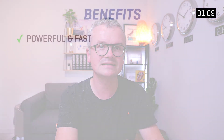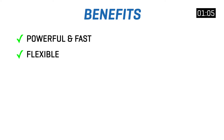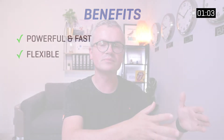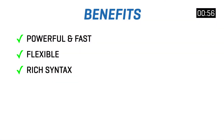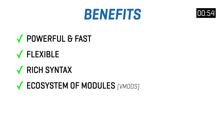The benefits of VCL are that it's extremely powerful and fast, and that's thanks to its architecture, its very narrow scope, and the fact that the code gets translated into C code. But it's also tremendously flexible when you compare it to a simple configuration file. When instead you have a full-blown programming language, the flexibility is second to none — and that is thanks to the rich syntax of VCL and the ecosystem of modules, VMODs as we call them, that allow you to do things that aren't possible in standard VCL.